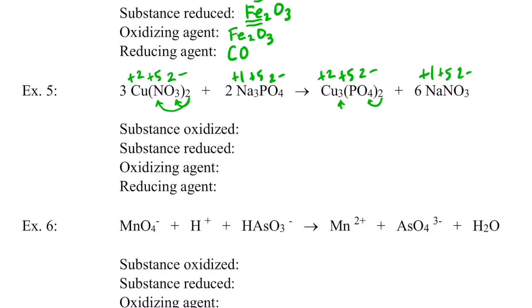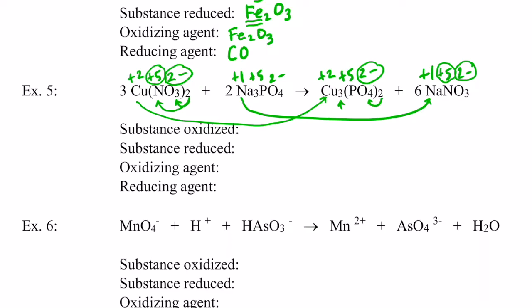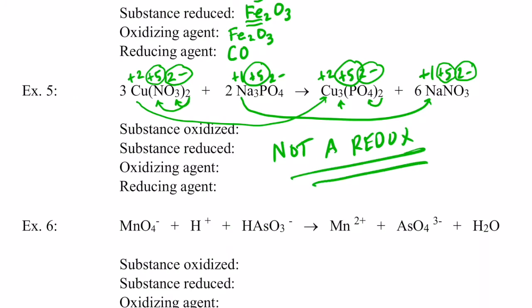Copper went from positive two to positive two — nothing changed. Nitrogen went from positive five to positive five. Oxygen went from negative two to negative two. Sodium went from positive one to positive one. Phosphorus went from positive five to positive five. This is not a redox reaction — there was no reduction or oxidation. Not all reactions involve losing and gaining electrons, and this is a great example of a reaction that is not a redox reaction.